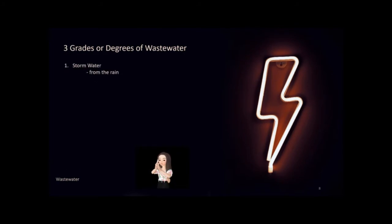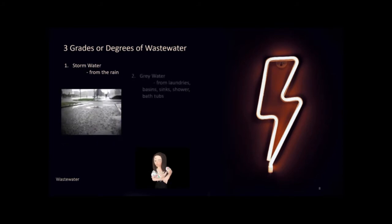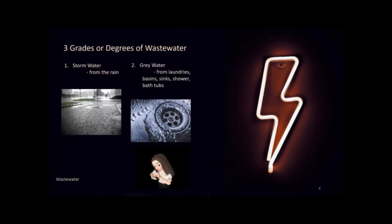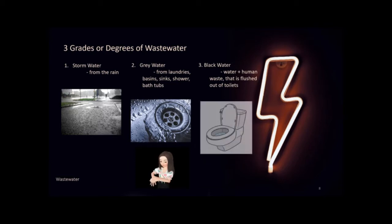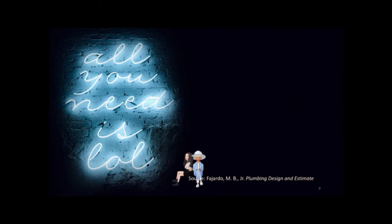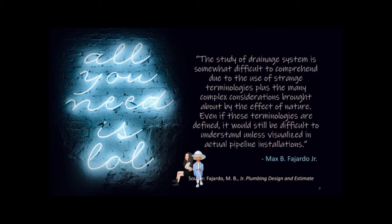Waste can be categorized by degree. The first degree is stormwater which comes from rain. The second degree is gray water, which comes from sinks, showers, and similar fixtures. The third degree includes solid and liquid waste that is flushed out of toilets and urinals. The drainage system as a whole, consisting of various forms of waste and vent correlations, forms one unit system. The study of drainage system is somewhat difficult to comprehend due to the use of strange terminologies and many complex considerations brought about by the effect of nature.